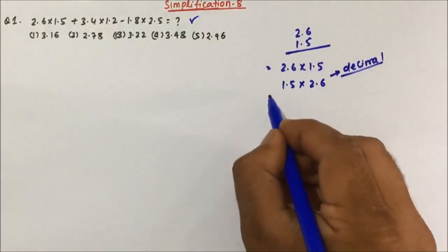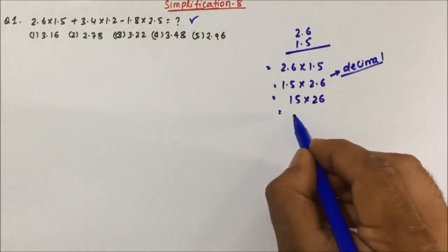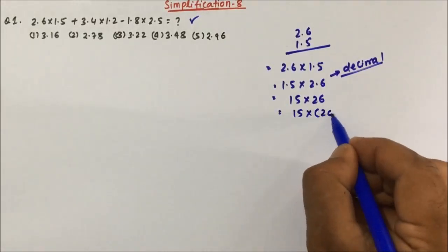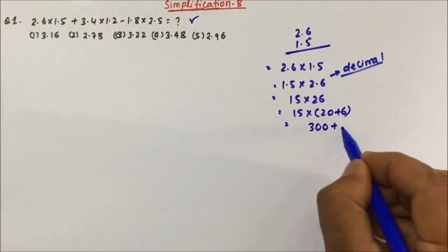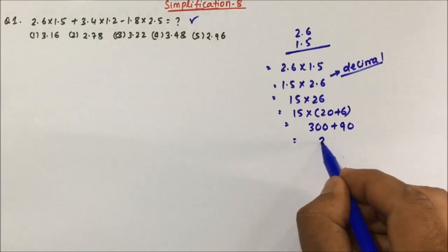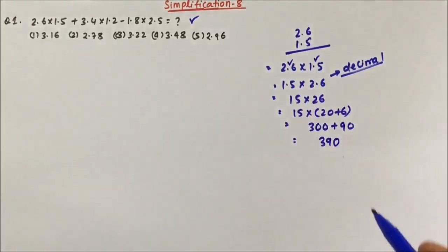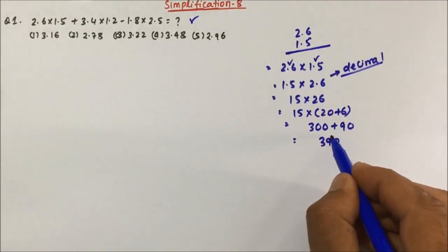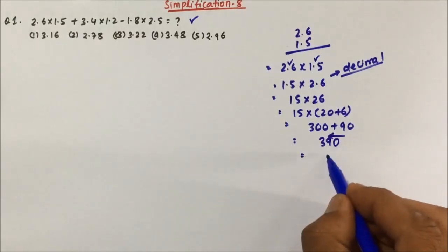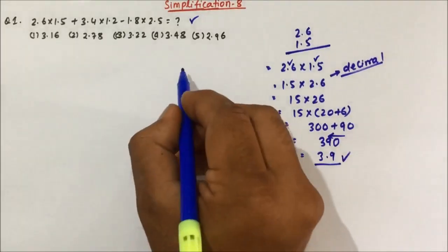Ignoring the decimal, 1.5 × 2.6 becomes 15 × 26. Now, 15 × 26 = 15 × 20 + 15 × 6 = 300 + 90 = 390. Now count the decimals: one decimal before the 6 and one decimal before the 5, so two decimals total. From the right side, place the decimal after two digits, giving 3.9. So 2.6 × 1.5 = 3.9.